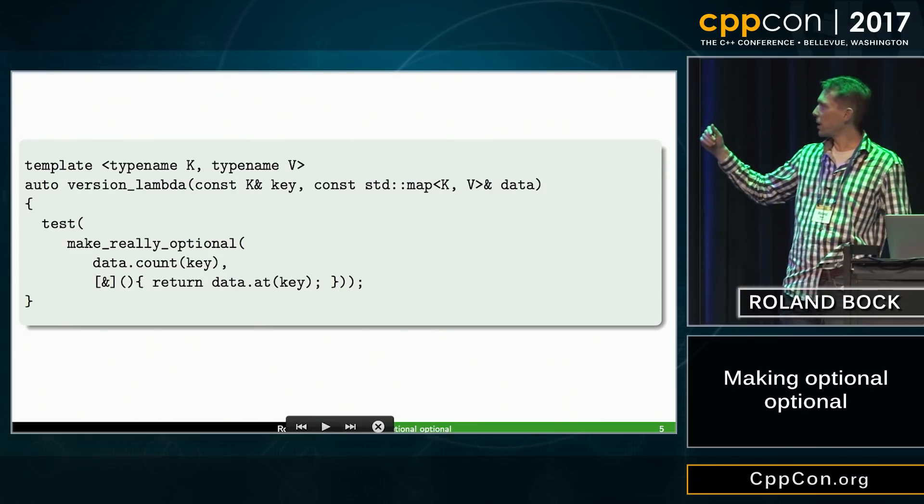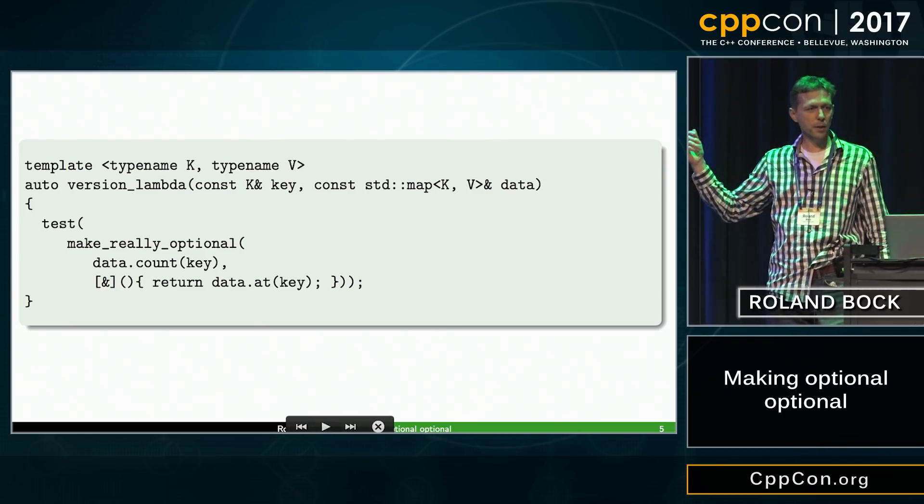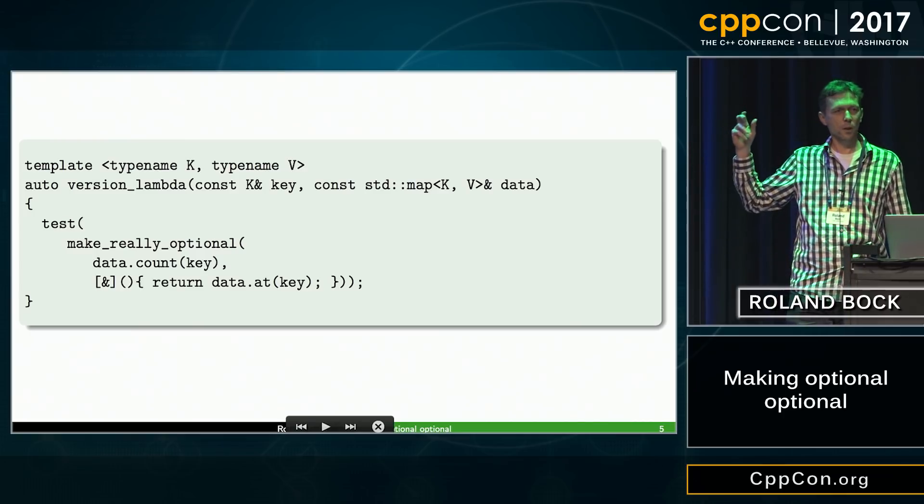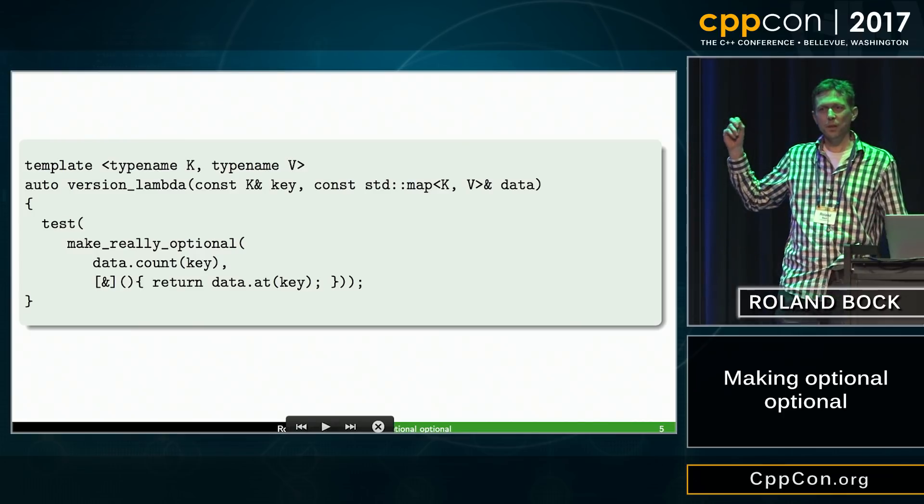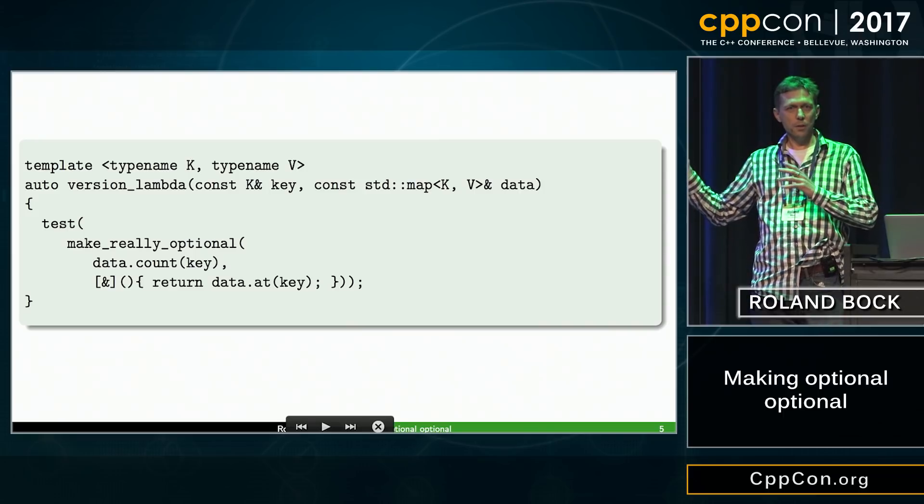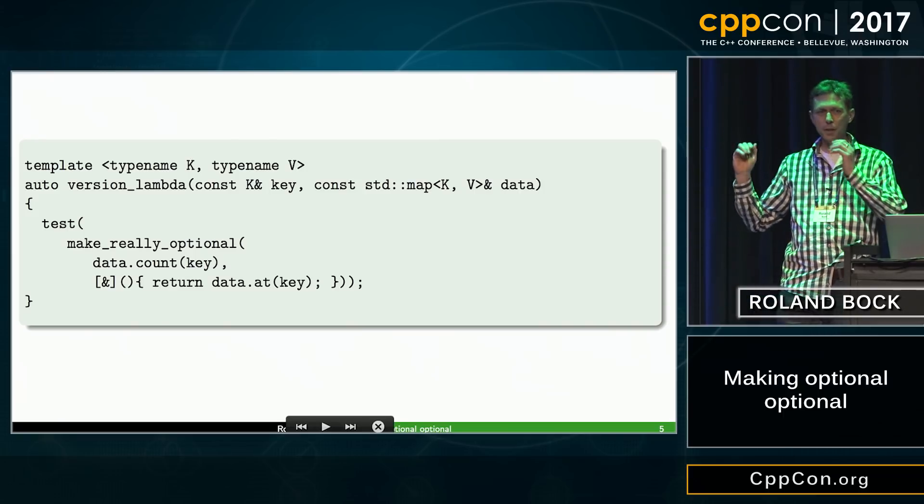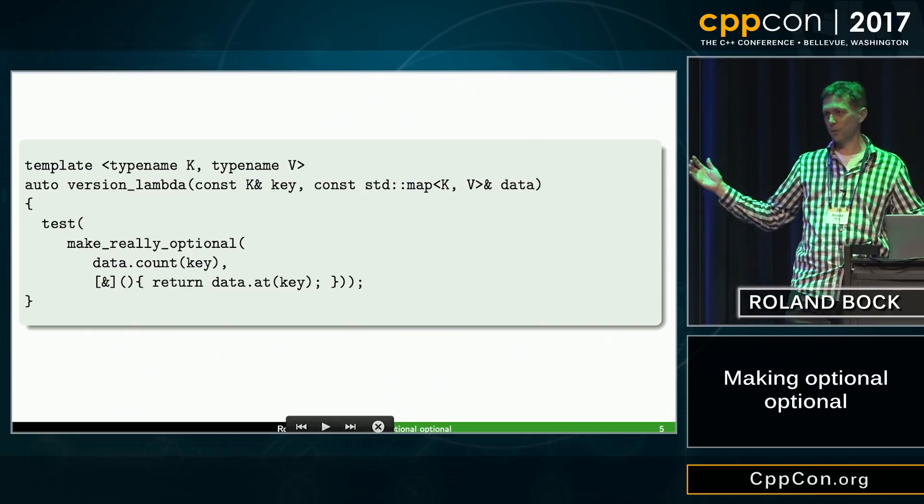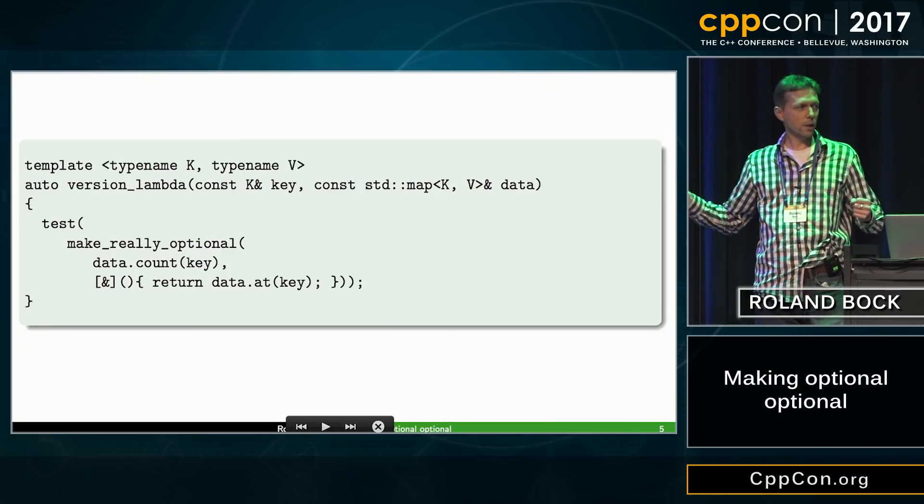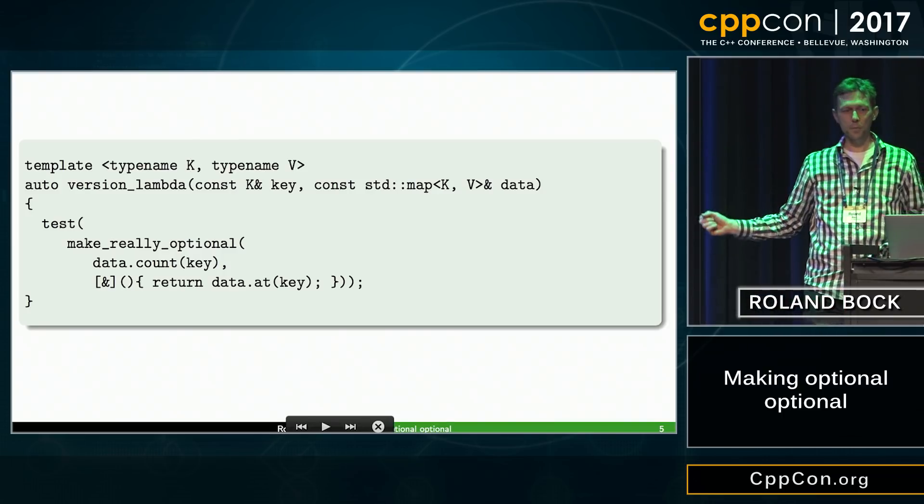And the good case, we just pass the optional with a value, and the bad case, we pass one without a value. But I certainly don't want to write std optional angle brackets type, because types can be very long. Especially in my library, types can be big. You don't want to write them.